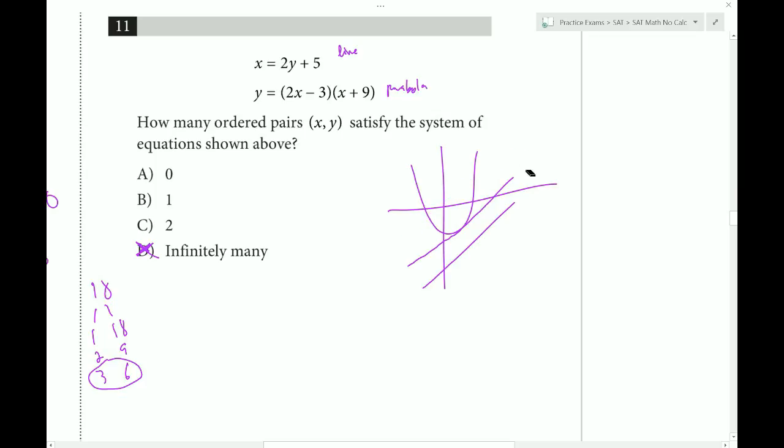Now, let's see if there's any shortcuts. Well, I could at least say where the roots of this parabola are going to be. So we're going to have a root at 2x equals 3. So x equals 3 halves. And x equals negative 9. So I know that negative 9 and 3 halves are going to be where my roots are.